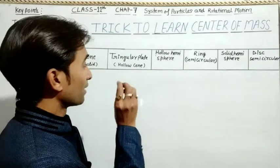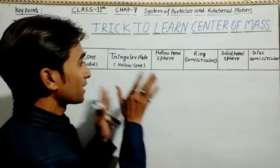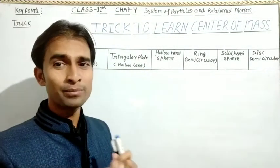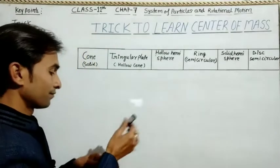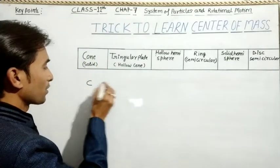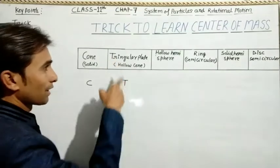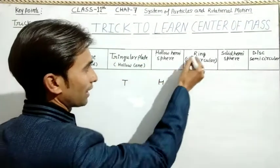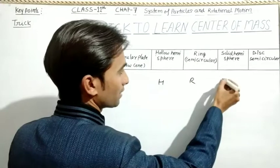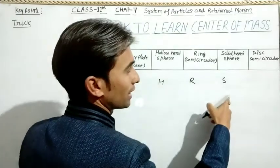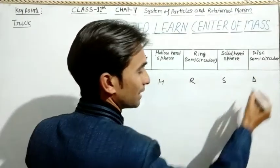For know the center of mass, we just use a simple trick. And simple trick is this: it is for C, it is for T triangular, H for hollow, and R for ring, and S for solid hemisphere, and D for disc.